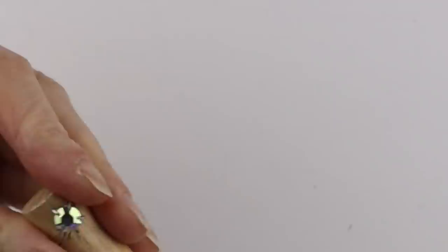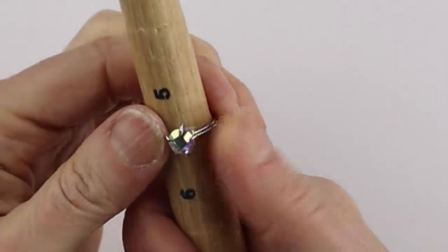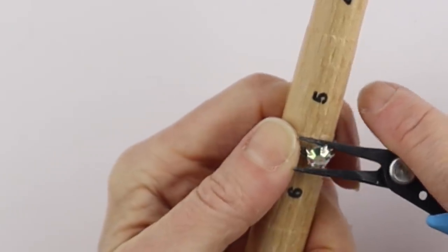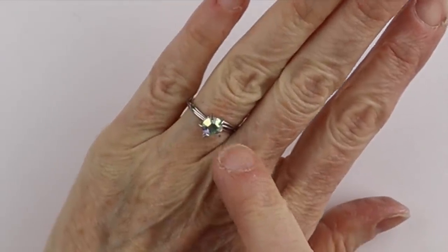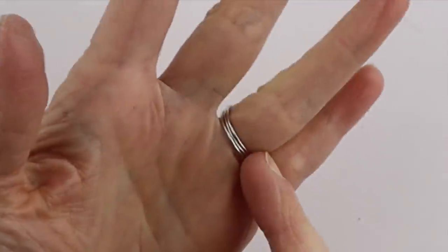Then you can put it back on the ring mandrel if you need to adjust it. Just take this and give it a little twist and there you have your prong ring made with a sequin and three paper clips.